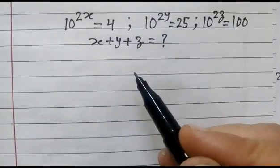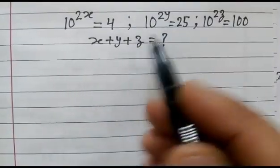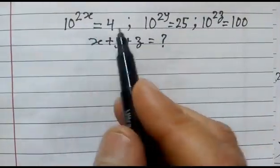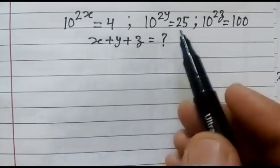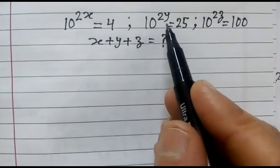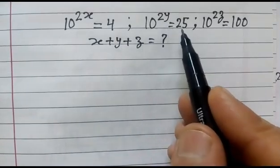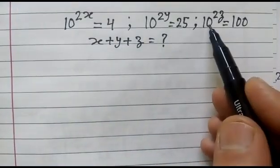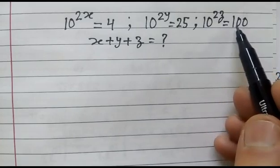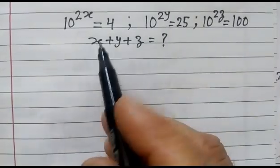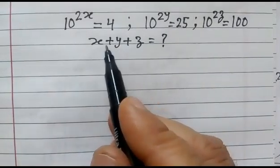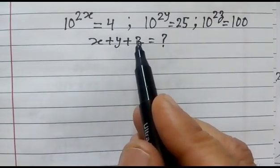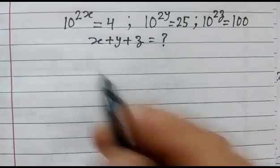Hi friends, we have given 10 to the power 2x is equal to 4, 10 to the power 2y is equal to 25, and 10 to the power 2z is equal to 100. We have to find out the value of x plus y plus z.